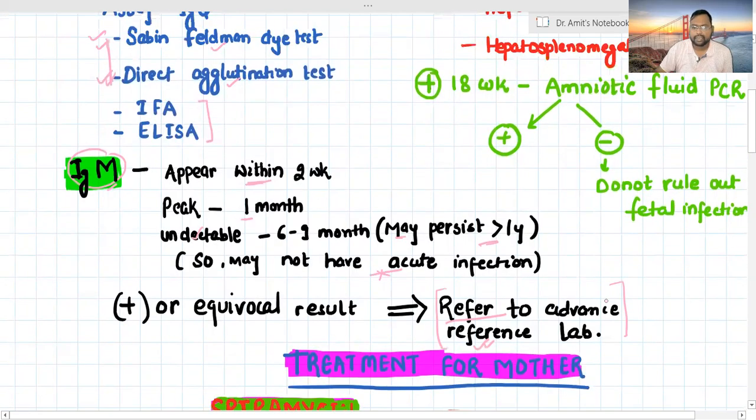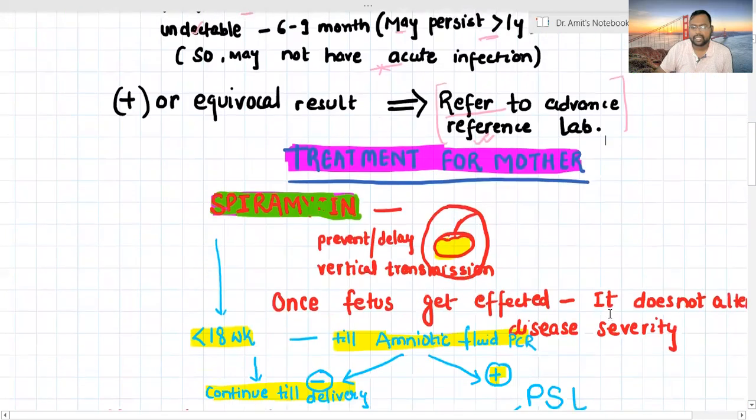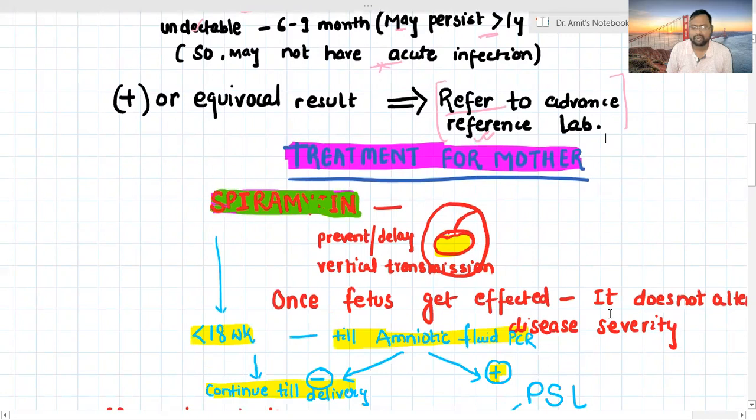What are the treatment options for the mother? If mother comes to you around 10 to 12, 13, 14 weeks, or just before 18 weeks, and you suspect TORCH infection or send TORCH profile, you have to start spiramycin. What is spiramycin? This drug's mechanism of action is that it prevents or delays vertical transmission. Start spiramycin and wait for 18, 16 to 18 weeks. Around 18 weeks, go for amniotic fluid PCR.